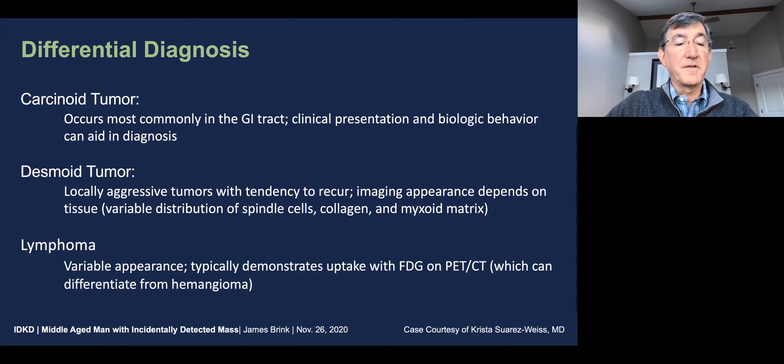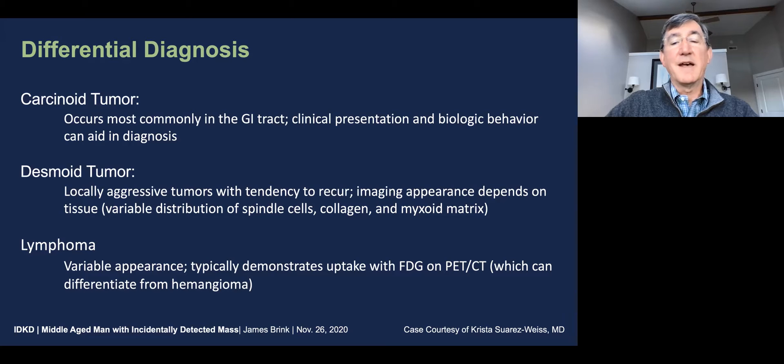Lymphoma, of course, can have a variable appearance, and these typically demonstrate uptake with FDG on PET-CT, which can differentiate from hemangioma.